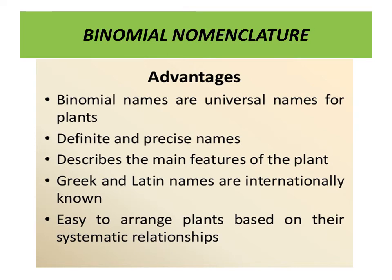The advantages of binomial nomenclature are: (1) Binomial names are universal for plants and animals. (2) Names are definite and precise. (3) They describe the main features of the plant or organism. (4) Greek and Latin names are internationally recognized. (5) They make it easy to arrange organisms based on their systematic relationships.